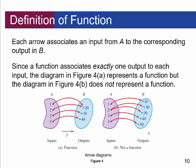Each arrow associates an input of A to the corresponding output B. Since a function must associate exactly one output to each input, figure A represents a function, but figure B does not. In figure B, input 2 goes to both 20 and 30 — that violates the definition of a function. Inputs can go to the same output, but an input cannot go to two different outputs.